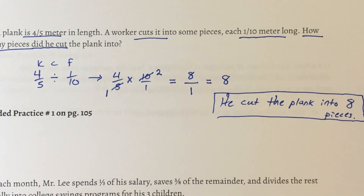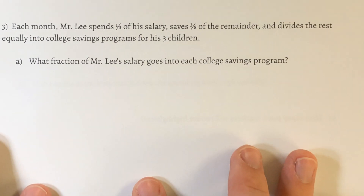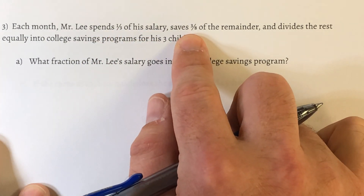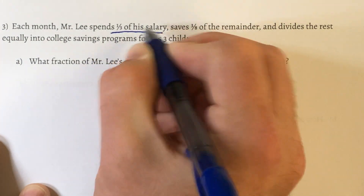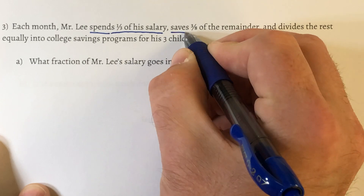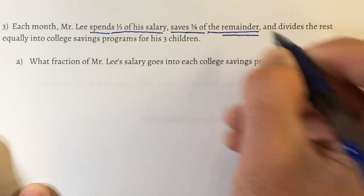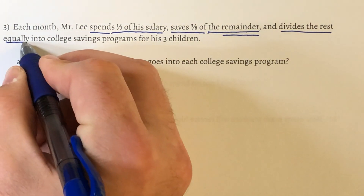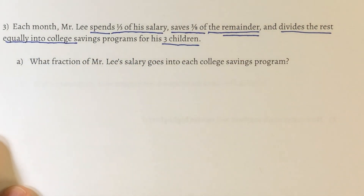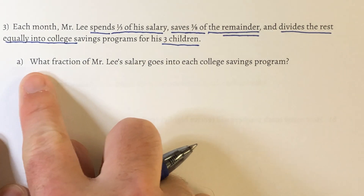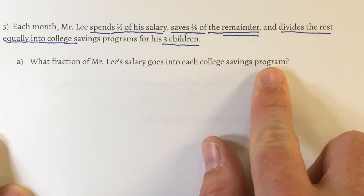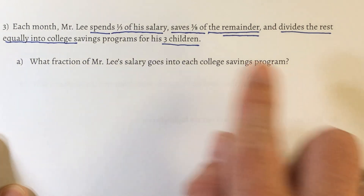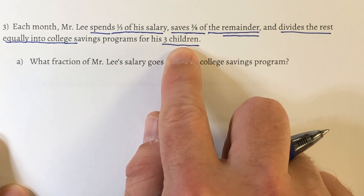Our next example: each month Mr. Lee spends 1/3 of his salary. He saves 3/8 of the remainder — and that's a key word, remainder. Then he divides the rest equally into college savings for his three kids. Part A: what fraction of Mr. Lee's salary goes into each college savings program? In other words, how much of his earnings is he going to divide among his three children?